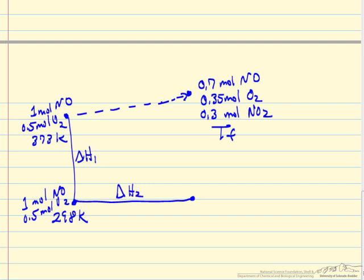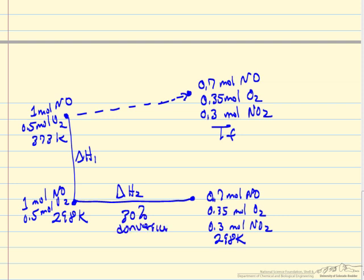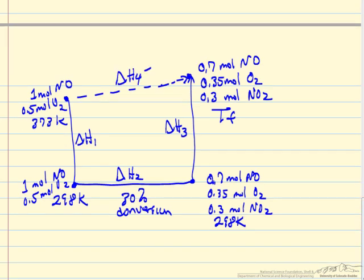We've listed the products now of reaction for 30% conversion. Then we're going to take these products and heat them up to the final temperature, so we'll call that delta H3. Our actual process, we'll call this delta H4, and delta H4 is equal to zero because it's adiabatic.